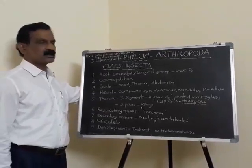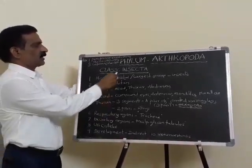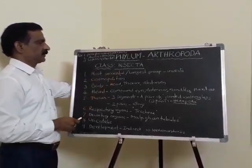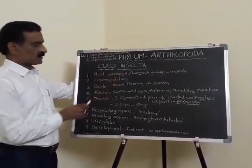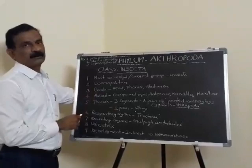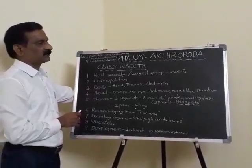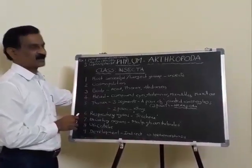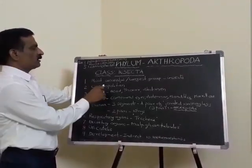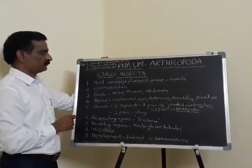Let us discuss the chief characters of class Insecta. Class Insecta includes the most successful and largest group of animals on the earth — the insects. They are cosmopolitan in nature; they are present everywhere.